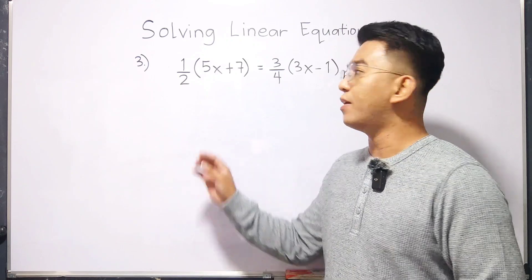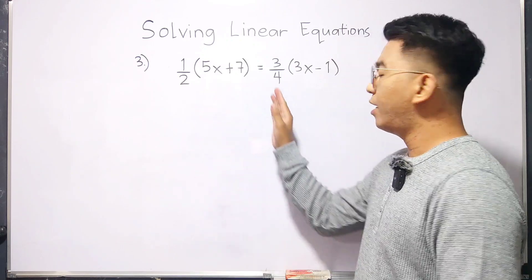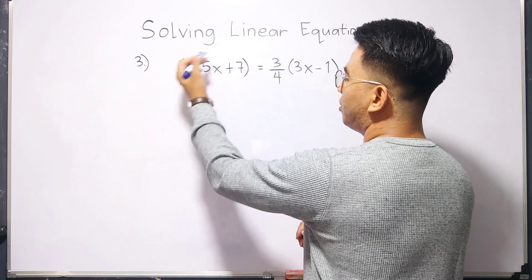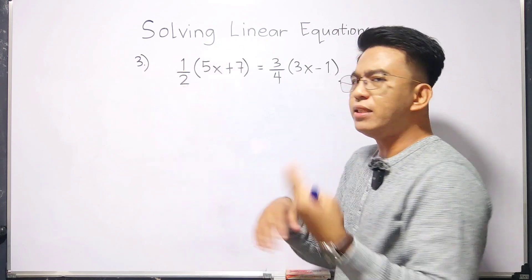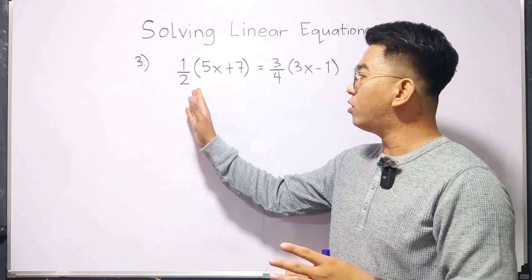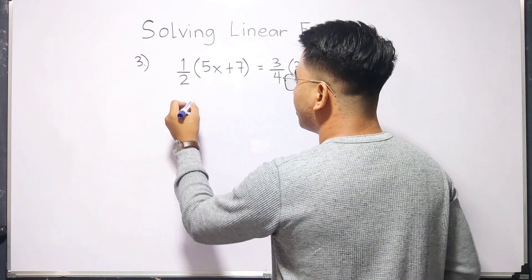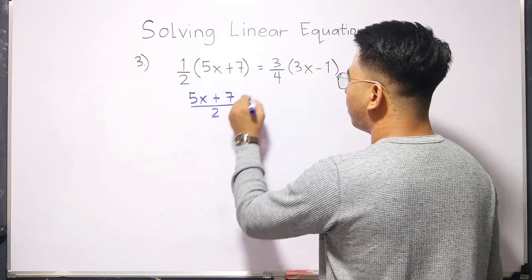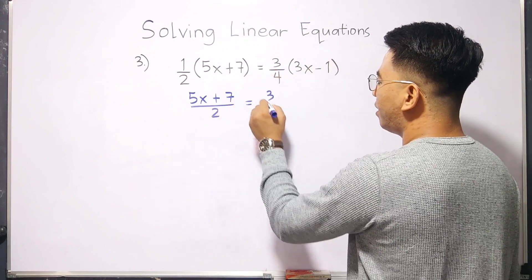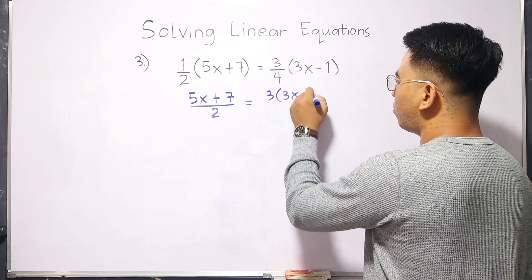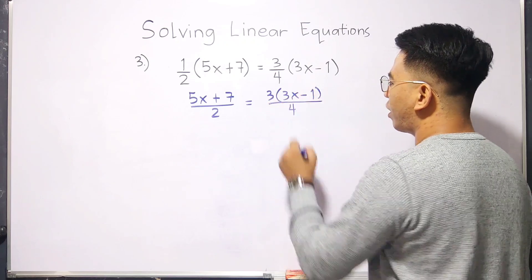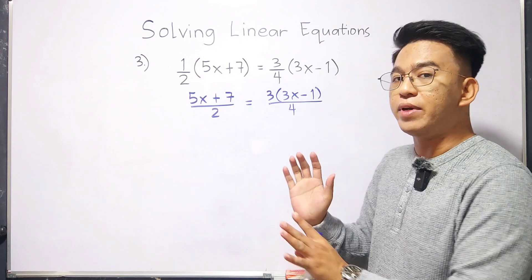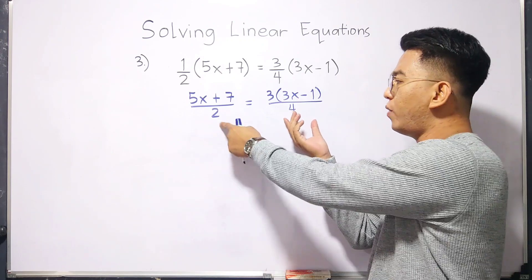Now, for example number 3, what we have here is 1 half times 5x plus 7 is equal to 3 over 4 times 3x minus 1. As you can see, we have a fraction outside the parentheses. So, basically, what we need to do here is we need to multiply this one. And it will become 5x plus 7 over 2 is equal to 3 times 3x minus 1 over 4. This one is same as with number 2, wherein there's a denominator. Here we have two denominators, which is 2 and 4.